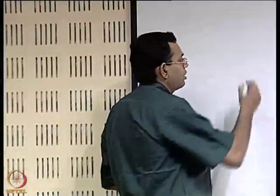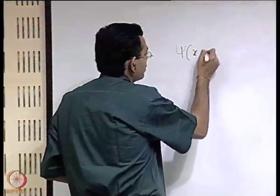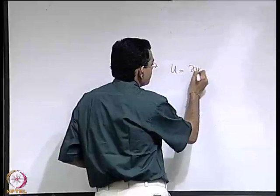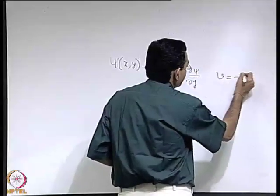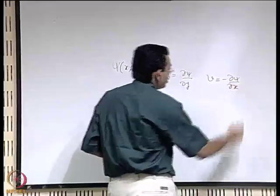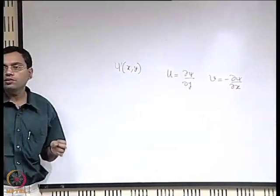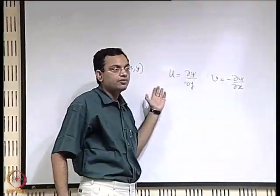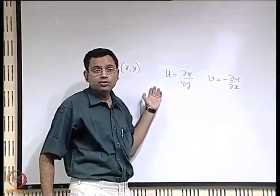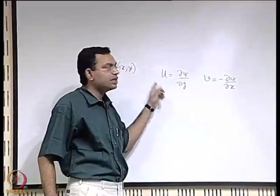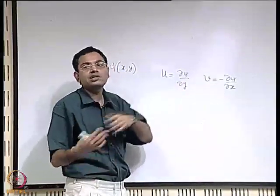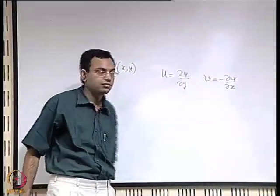We continue with our discussion on stream function. The stream function is defined as a function of x and y with the understanding that it should satisfy the requirement of mass conservation, constrained by the continuity equation. The special case giving the parametric form is 2-dimensional incompressible flow. It is defined for 2-dimensional incompressible flow; for other types of flows, it may be defined with a slightly adjusted manner.